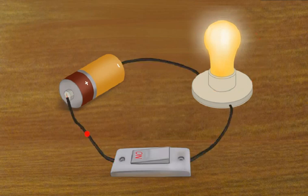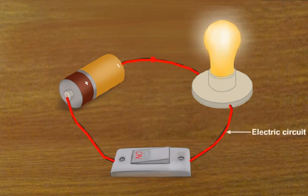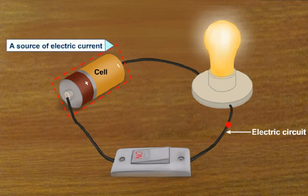The closed path in which the current flows is called an electric circuit. The essential requirements for a simple electric circuit are as follows: a cell which is a source of electric current,